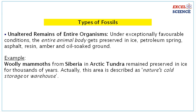The first type is unaltered remains of entire organisms. Under exceptionally favorable conditions, the entire animal body gets preserved in ice, petroleum springs, asphalt, resin amber, and oil-soaked ground. For example, woolly mammoths from Siberia in the Arctic tundra remain preserved in ice for thousands of years. This area is described as nature's cold storage or warehouse.